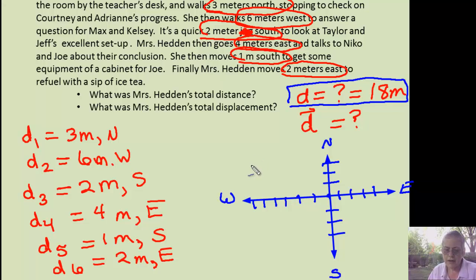Right, now I'm going to go ahead and put in my directions, each of my distances. So I start out going 3 meters north. Then I go 6 meters east. Then I go 2 meters south. Then I go 4 meters east. Then I go 1 meters south. And then I go 2 meters east. And so I end up right back where I started from.